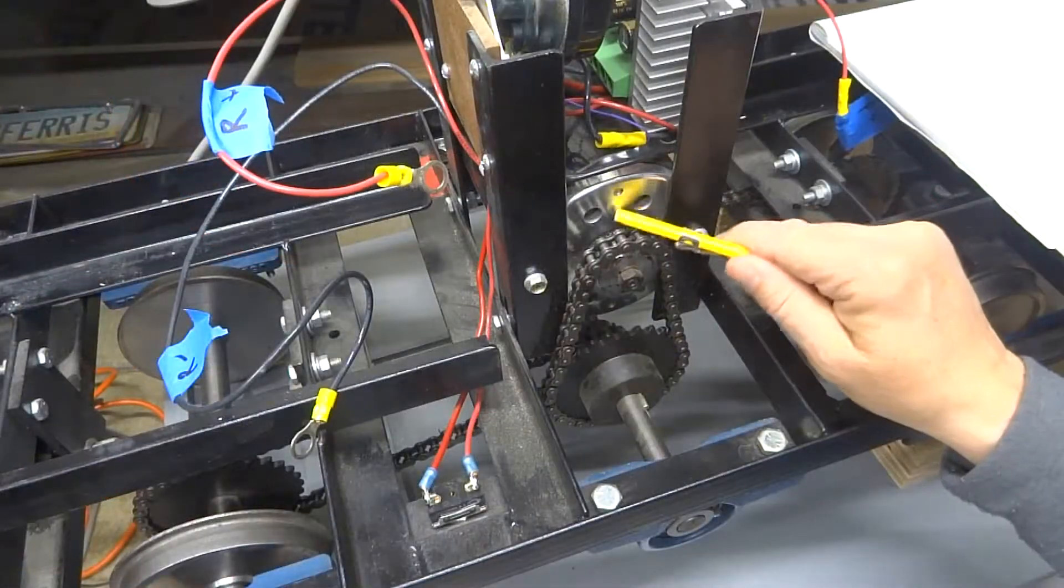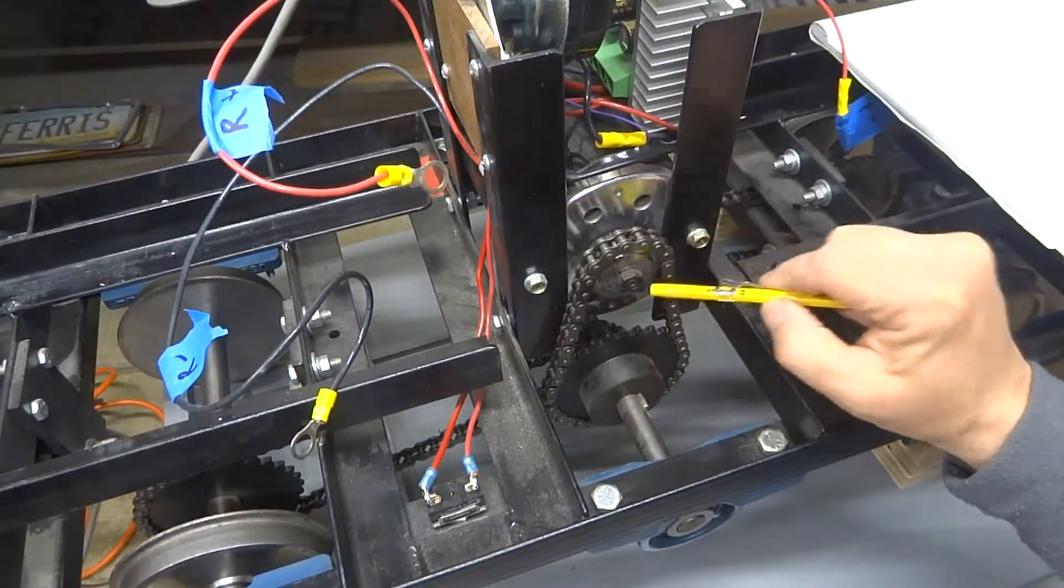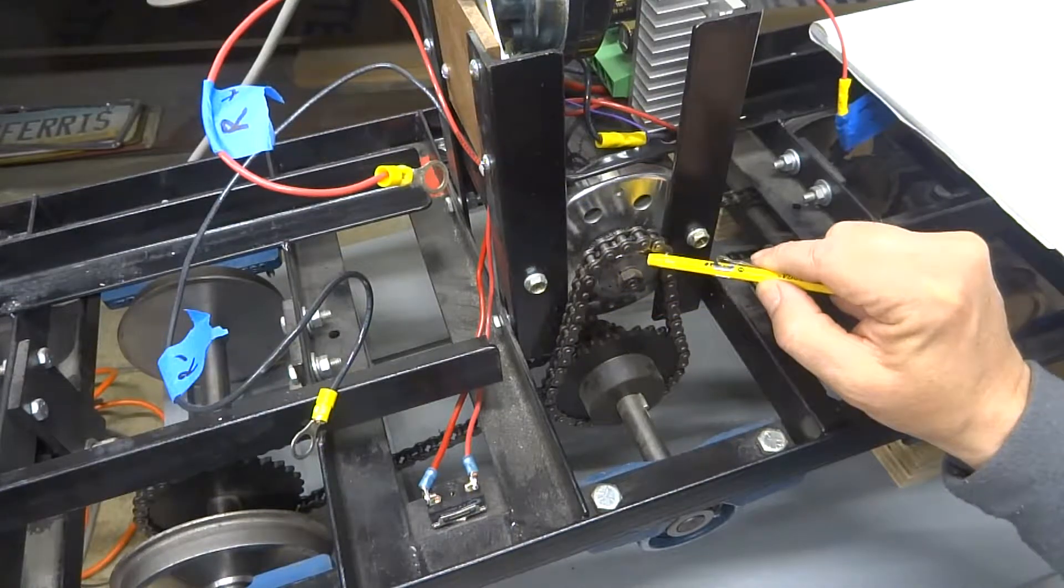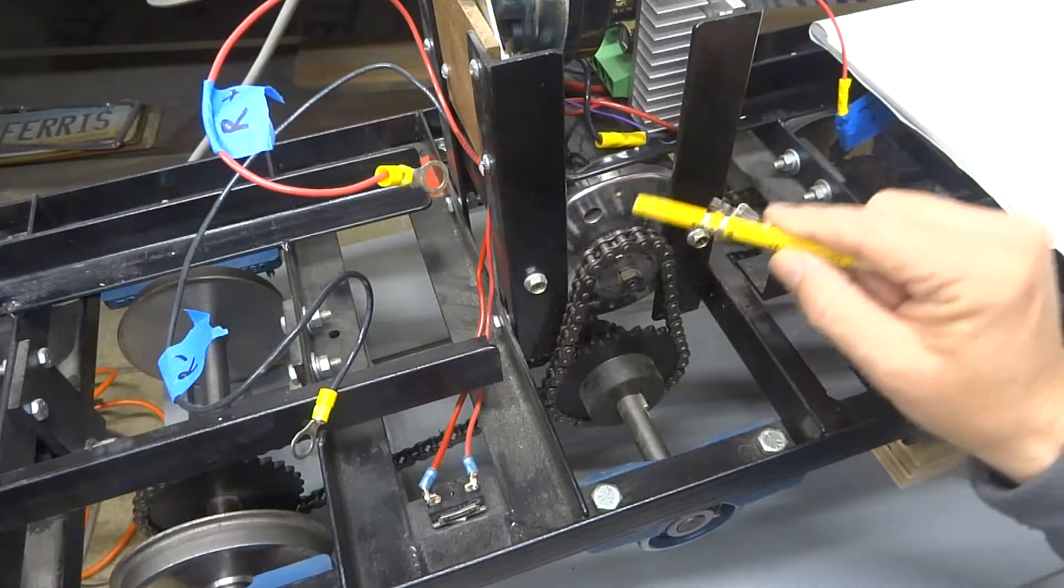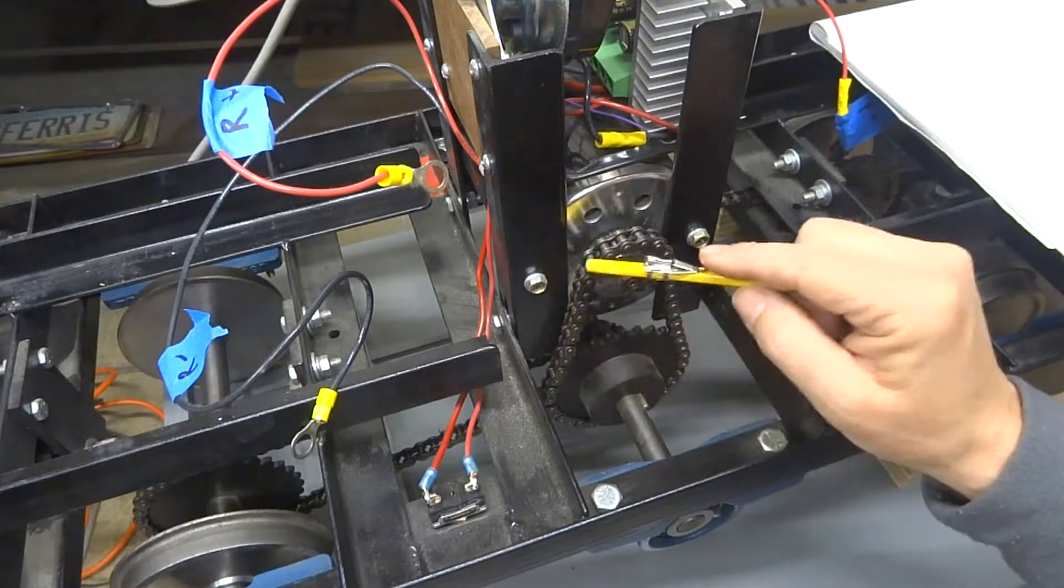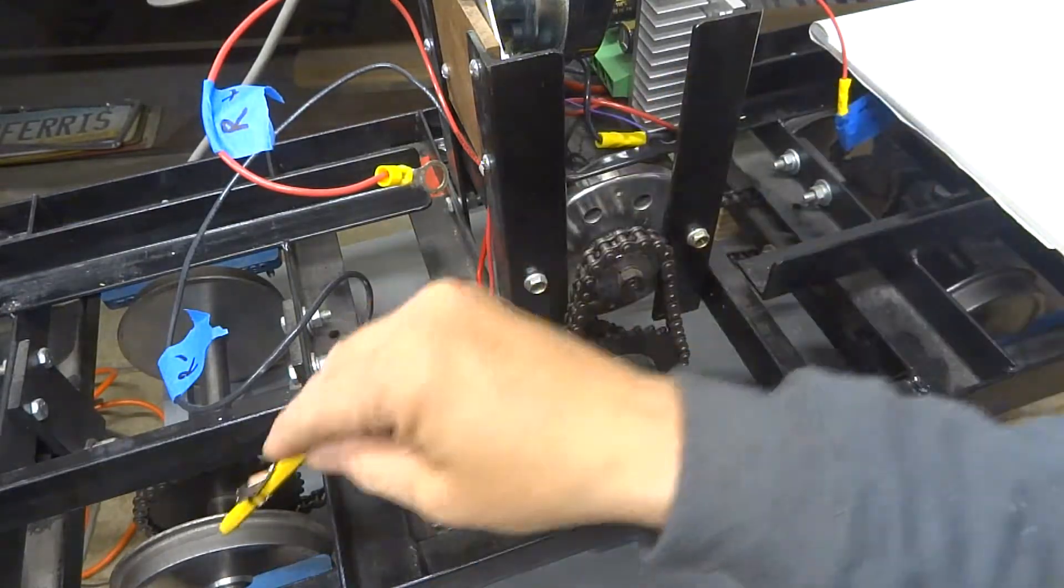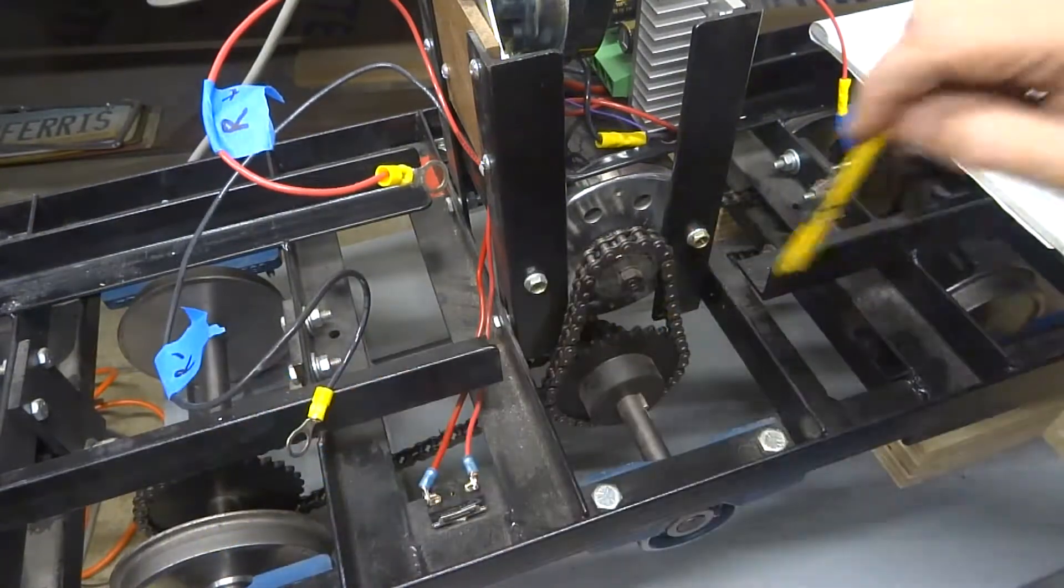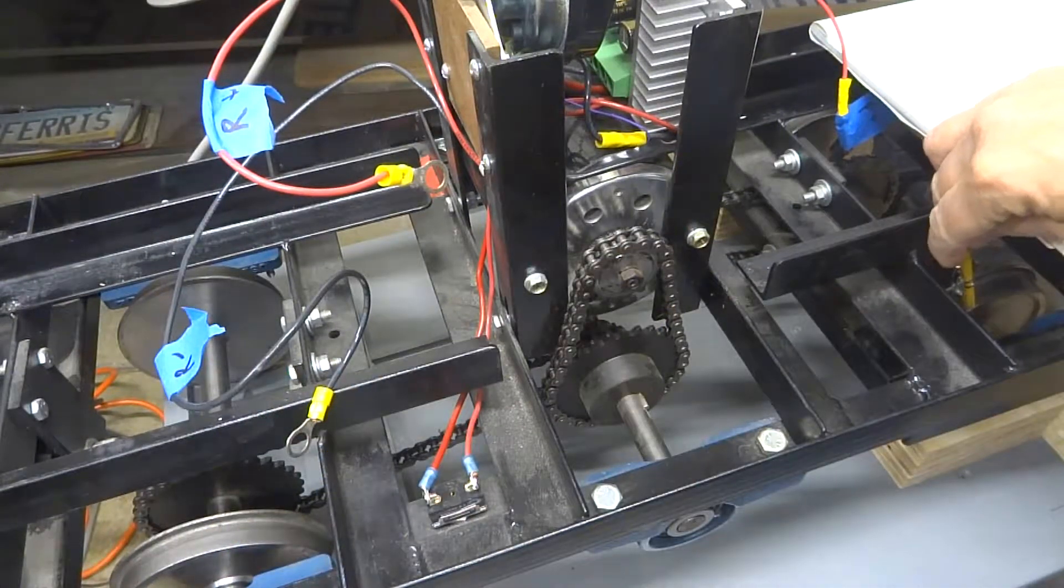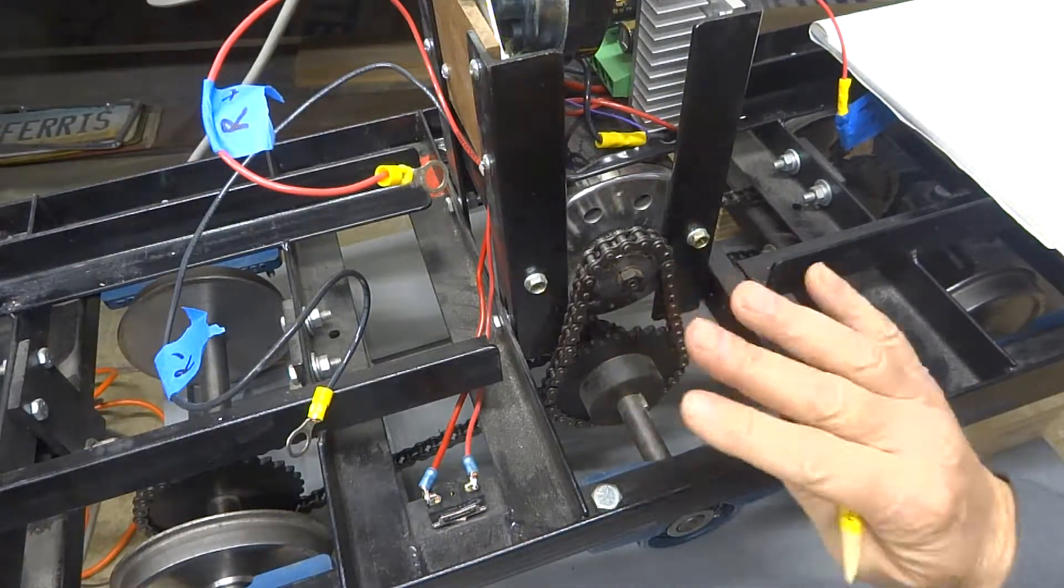This is our 24-volt motor. On the end of the shaft is a sprocket with 15 teeth on it, and that is driven by chain down to a center axle. That axle in turn drives the rear axle and the front axle that actually have the wheels on it.